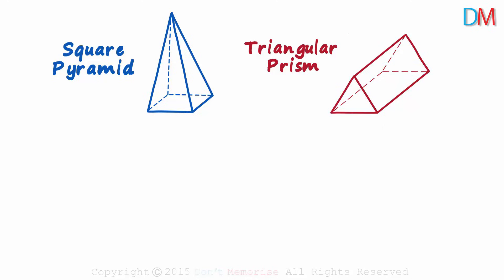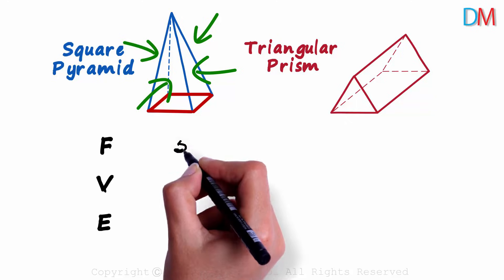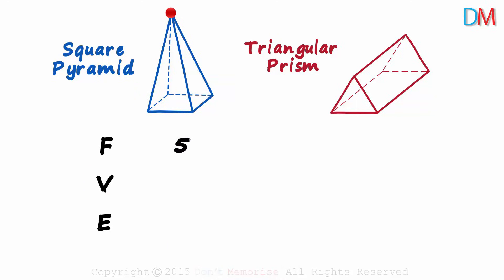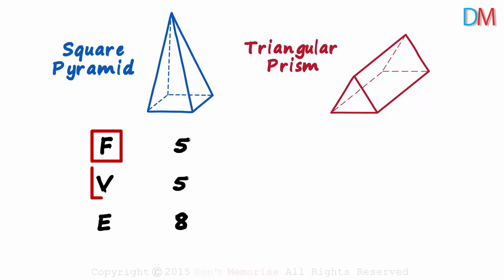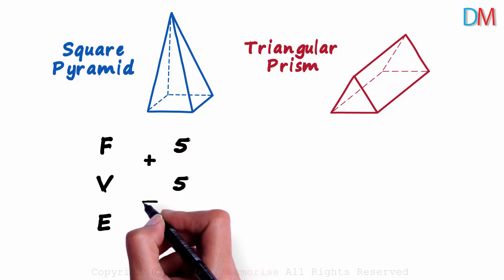We need to find the number of faces, the number of vertices, and the number of edges in each of the solids and see if F plus V minus E will give us two. Let's tackle the first solid, a square pyramid. There are four triangular faces and one square face — five in all. One vertex at the top and four at the base — five vertices. Four slant edges and four edges at the base — a total of eight edges. So F, V, and E are five, five, and eight respectively, and five plus five minus eight gives us two.